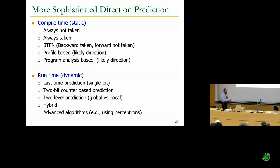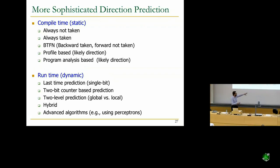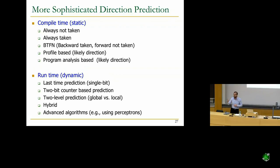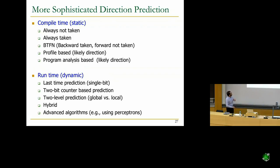Some existing machines use neural networks for branch prediction — the simplest form being a perceptron. However, they're not the most accurate given hardware constraints. There are heuristic-based algorithms that happen to be more accurate at this point. The static approach means you don't use dynamic information — you rely on the compiler or programmer.